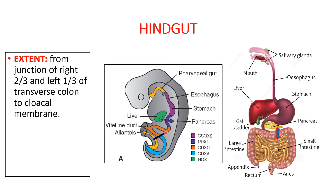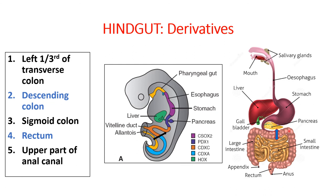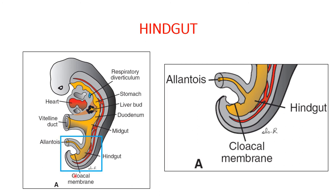After finishing the midgut, we now begin with the hindgut. The hindgut extends from the junction of the right two-thirds and left one-third of the transverse colon to the cloacal membrane. The derivatives of the hindgut are the left one-third of the transverse colon, the descending colon, sigmoid colon, rectum, and upper part of the anal canal. The hindgut is closed on its ventral aspect by the cloacal membrane, with an opening of the allantois into the hindgut.